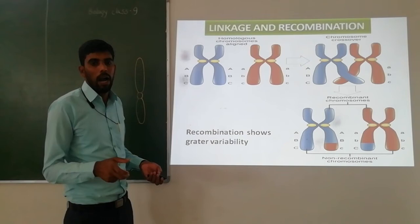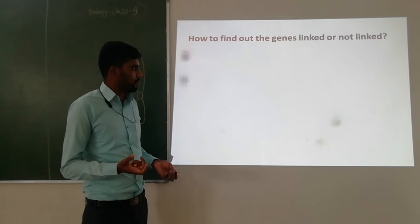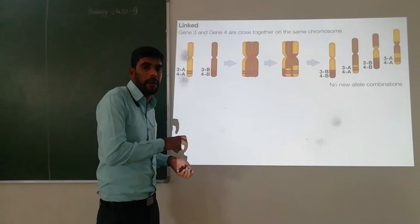How to find out whether genes are linked or not linked? That linkage can be found out through offspring progeny. In the offspring progeny, we check how many are recombinant types — those that have shown variation — to determine whether genes show linkage.